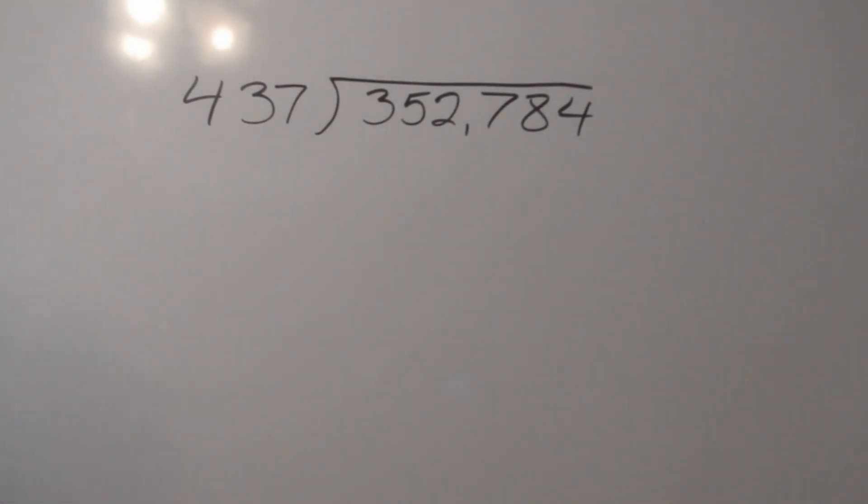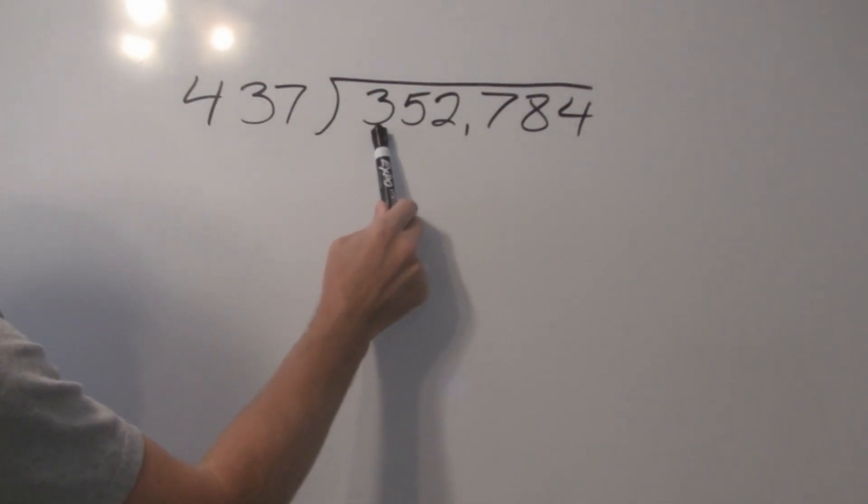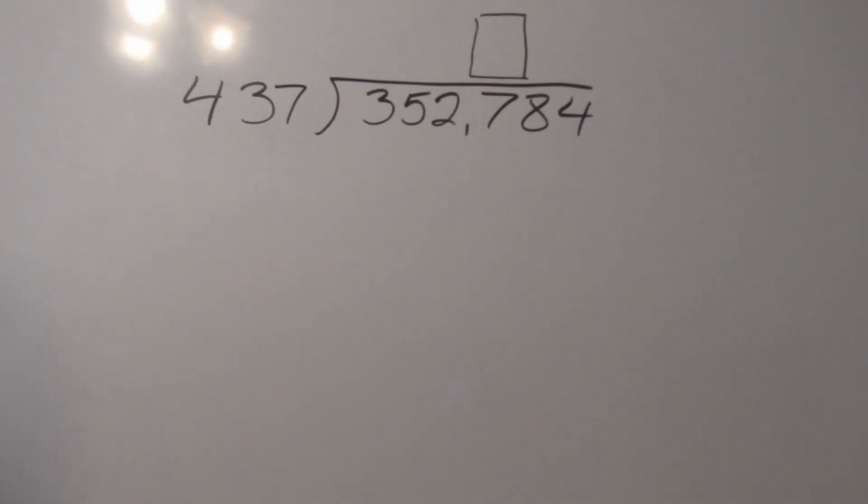This is where trial and error comes in. One thing I like to do to help me in division is I like to round off my numbers in order to kind of come up with an idea of how many times this number, 437, will go into 3,527 because that's what we determined where we need to go. And this is where we're going to determine how many times it will go in. When I speak of rounding off my numbers, what I'd like to do is, for me personally, I would like to probably round off this number, 437, down to, let's say, 400. 3,527, maybe I could round that to 3,500.